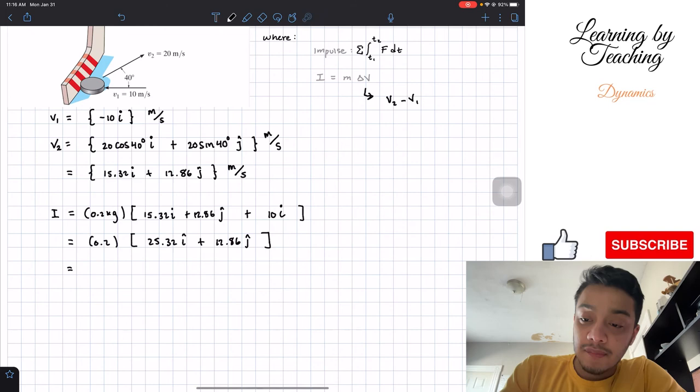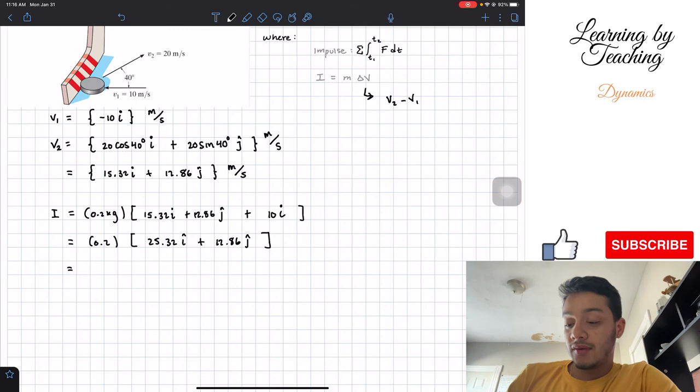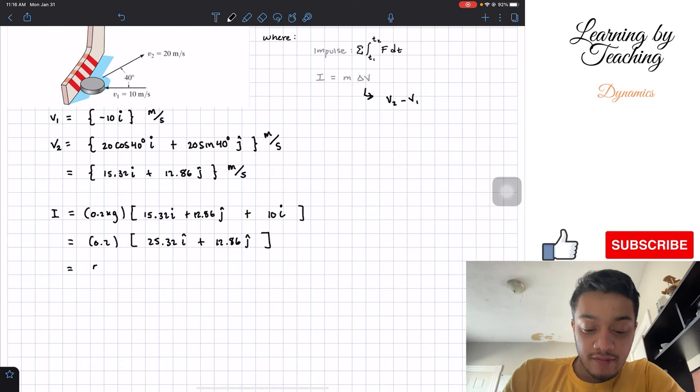The last thing I could do is multiply this 0.2 by both of them. If I do that, we're going to get a total of 5.06 in the i direction plus 2.57 in the j direction.